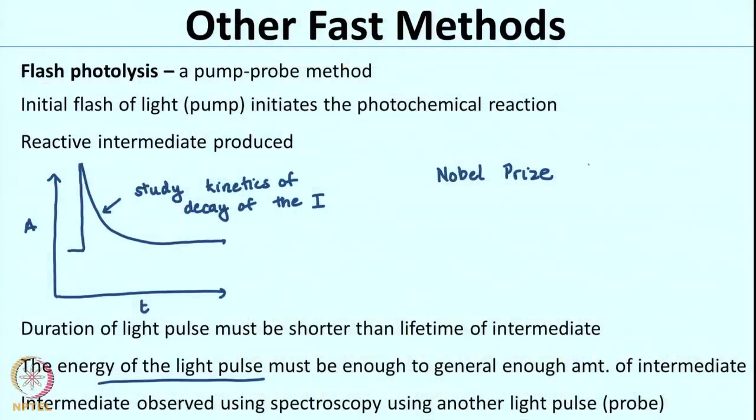This technique can give you information for reactions at the femtosecond scale. If you want to know more, you can look at the Nobel Prize in 1999 given to Professor Ahmed Zewail for development of these techniques that can monitor reactions at the femtosecond scale. I thought it would be a good idea to give you a flavor of how in research labs these methods are actually used to understand chemical reactions, while in this course we focus on the theory behind them.